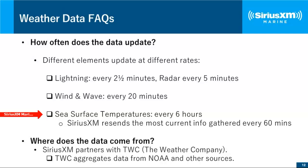We partner with The Weather Company — that's the Weather Channel, TWC. They create a SiriusXM marine recipe for us, getting sea surface temperature from one satellite source, NEXRAD radar storm data from another, and lightning strike information from another. All that is checked for accuracy, then amalgamated into a package which we beam to SiriusXM receivers.